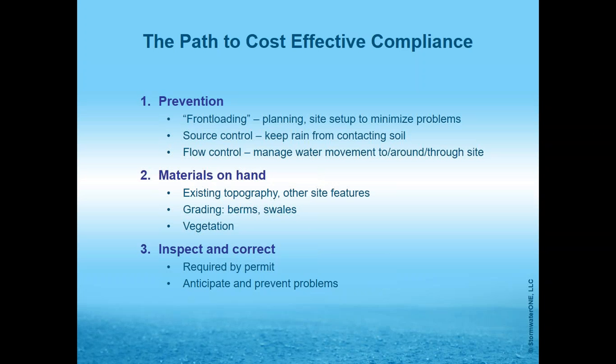Vegetation is actually the first BMP in the Washington State Stormwater Manual — preserved vegetation provides all sorts of beneficial functions. The third step is inspect and correct. Every permit requires inspection, and it's not just a compliance issue — it gives you an opportunity to anticipate and prevent problems before they arrive.